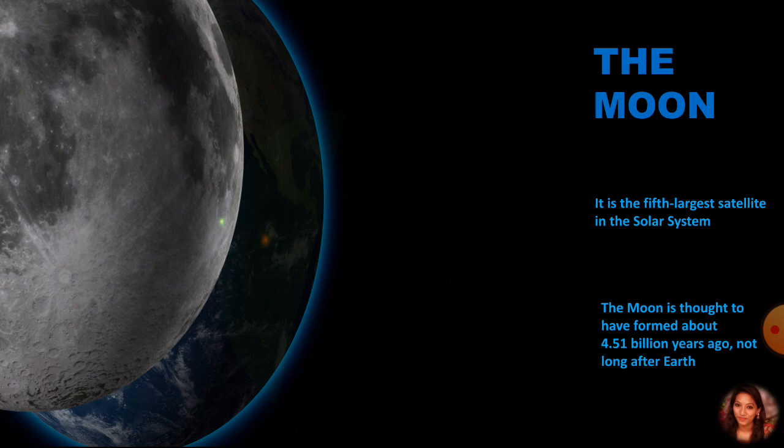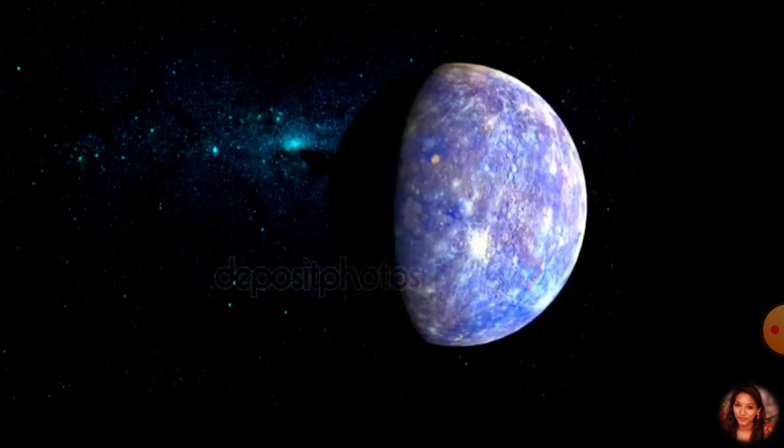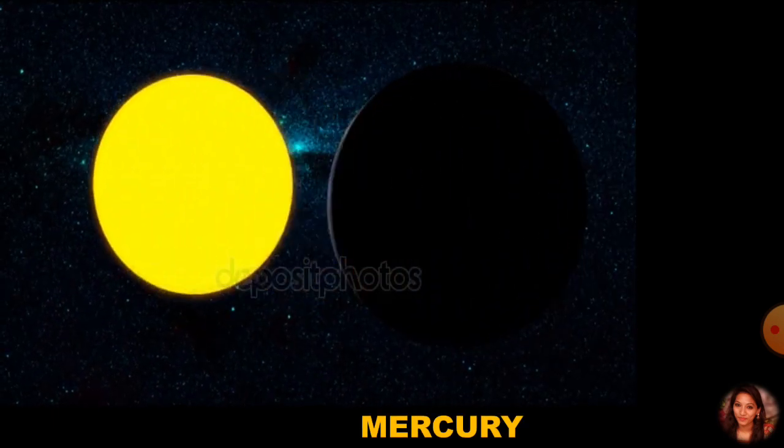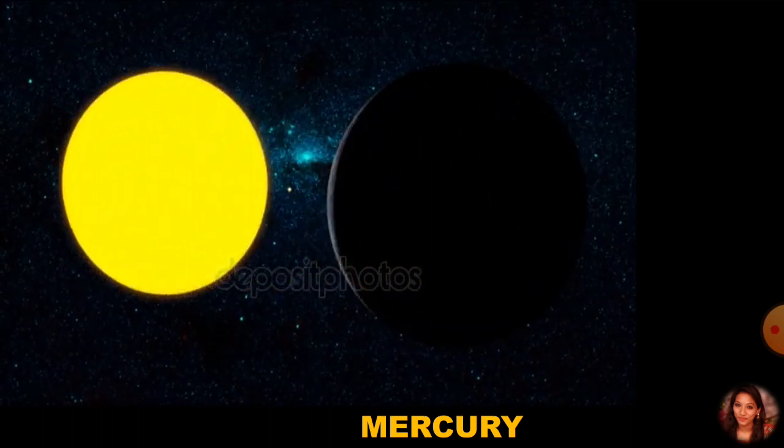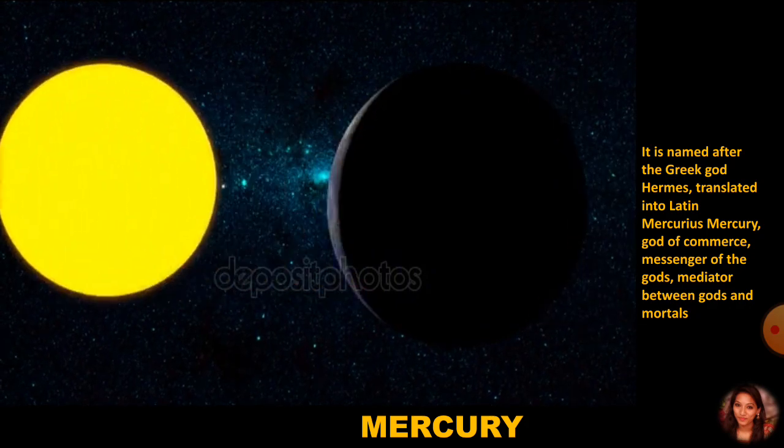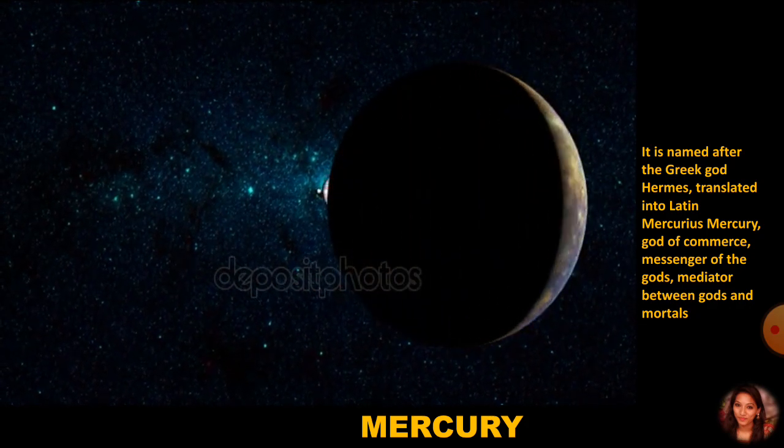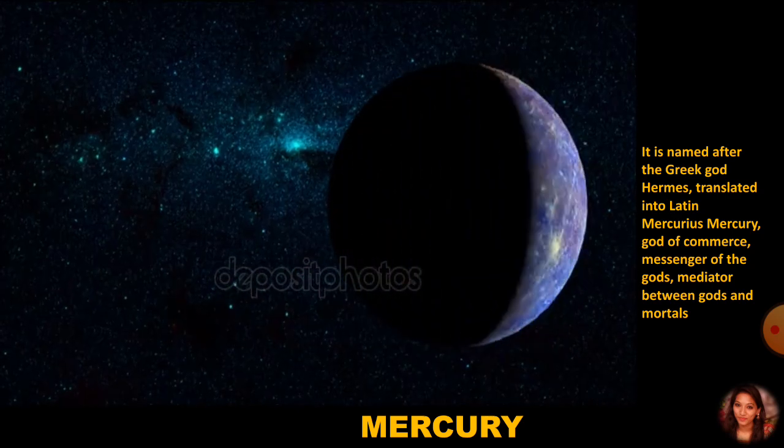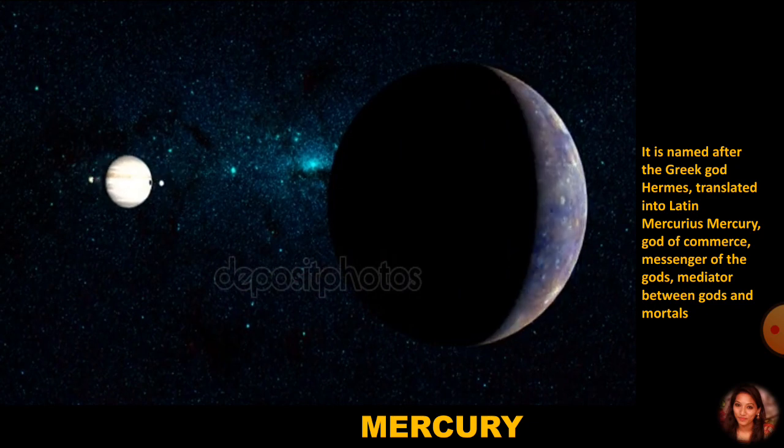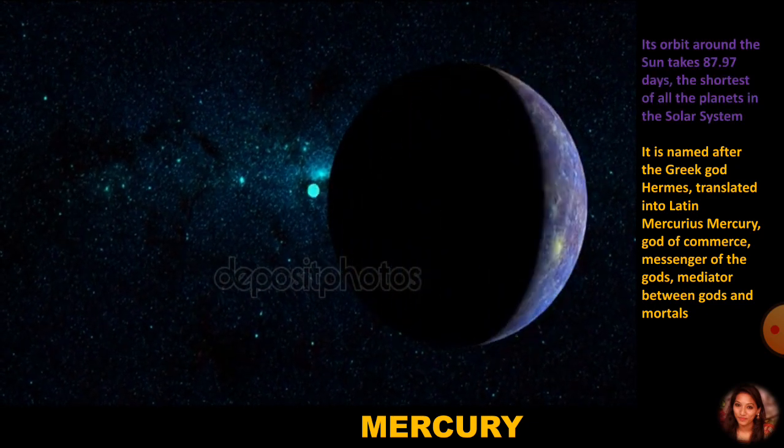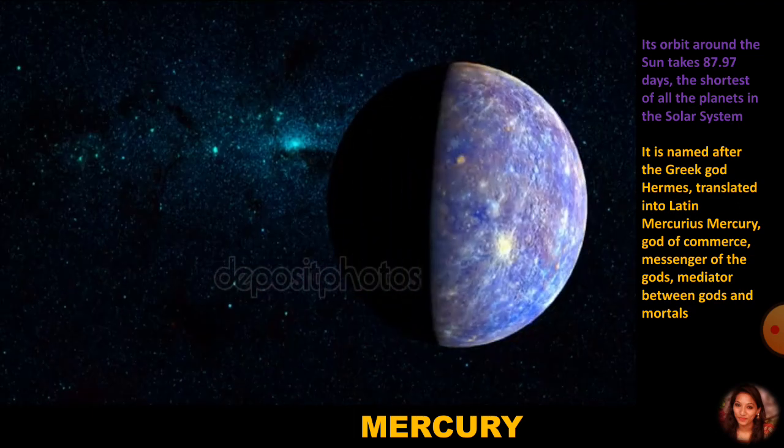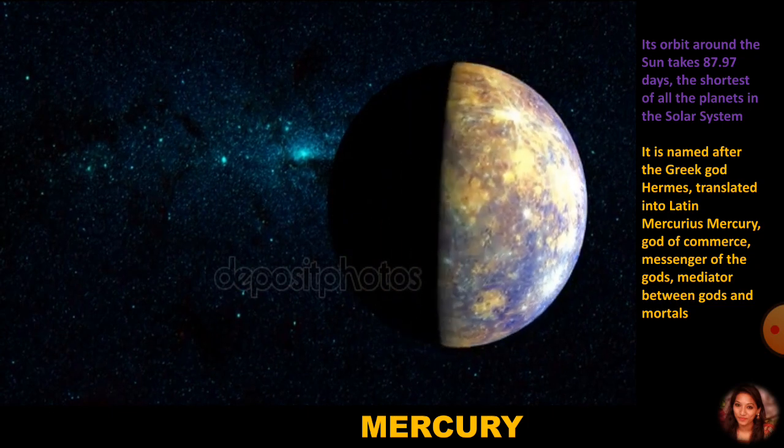Now, about Mercury. The planet Mercury is nearest to the Sun. It is named after the Greek god Hermes, translated into Latin as Mercurius, Mercury, god of the messengers of the gods and mediator between gods and mortals. Mercury's orbit around the Sun takes 87.97 days, the shortest of all the planets in the solar system.